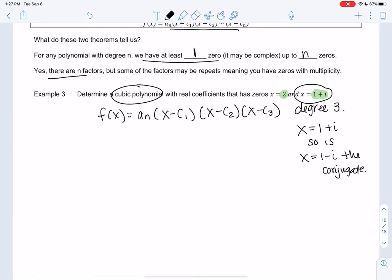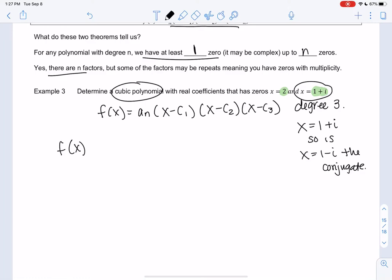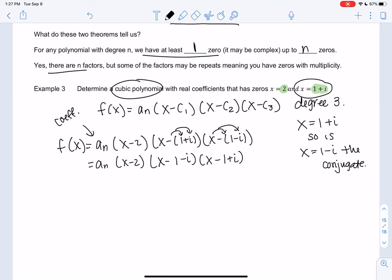So we get to do some fun multiplication right now. So f of x equals a sub n. That's just a coefficient. It can be any number, actually. And we'll get x minus 2, x minus 1 plus i, and x minus 1 minus i. I'm just going to distribute the negative, and then we can start multiplying this out. x minus 1 minus i, x minus 1 plus i. So we have to be extra careful with all these negative signs right now.